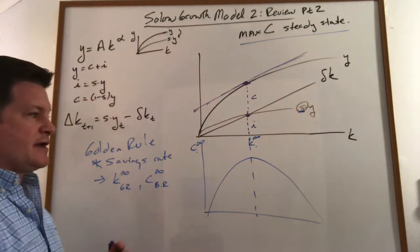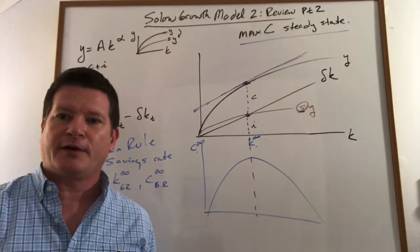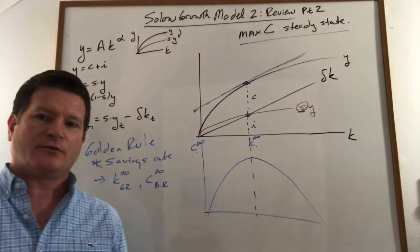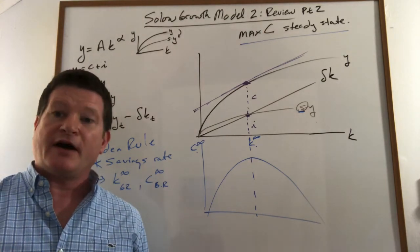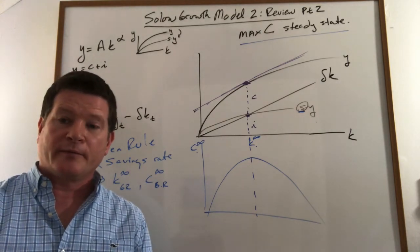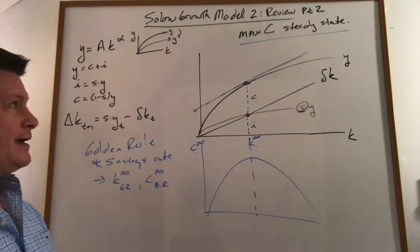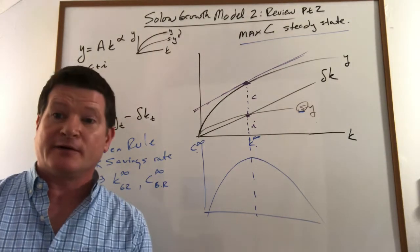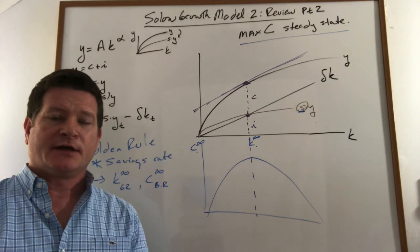These are all steady state concepts because the golden rule implies some sort of a welfare choice or an evaluation or a normative comment. And we don't really think of it being better than any of the other steady states. It's just the one that happens to maximize consumption.